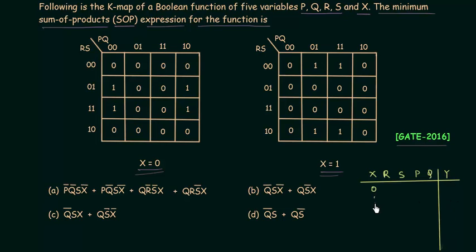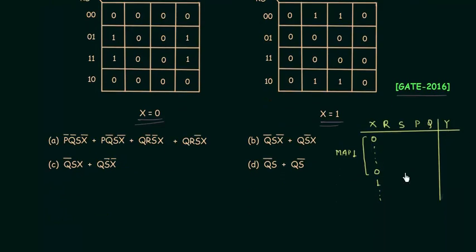X is 0 for the first 16 cases — this forms map 1. Map 1 has 16 cells, and the output values for all 16 combinations are already filled in. After this, X equals 1 for the next 16 cases, forming map 2. The output Y for those 16 combinations is also already filled in map 2.